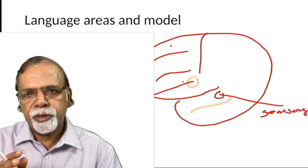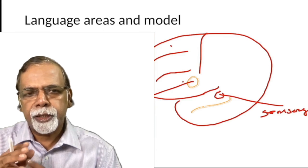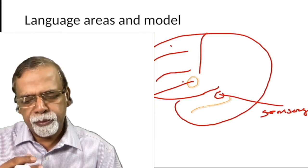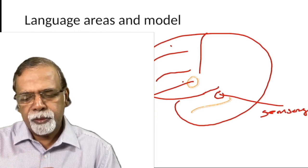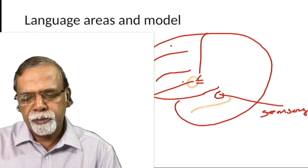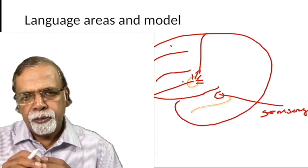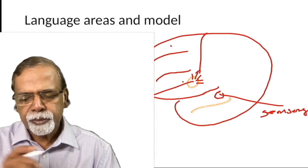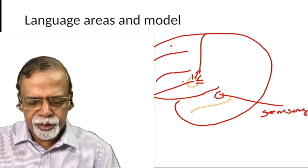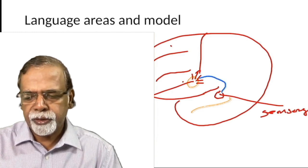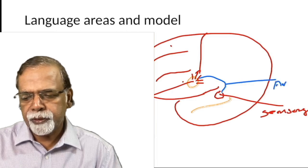The sensory area is where you understand or comprehend speech. The motor area — Broca's area — stimulates the necessary muscles for vocalization of speech and language. These two areas are connected by the arcuate fasciculus.